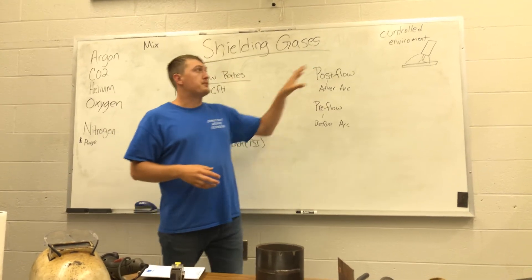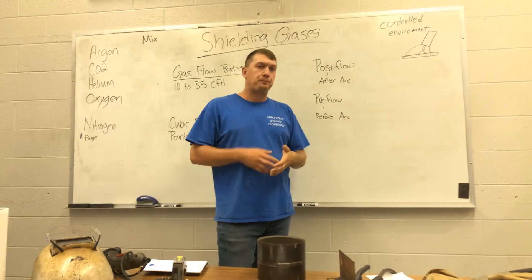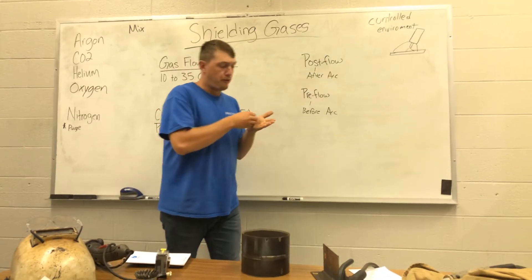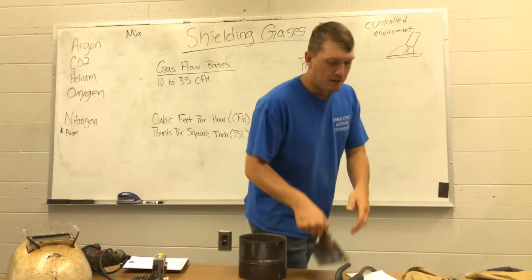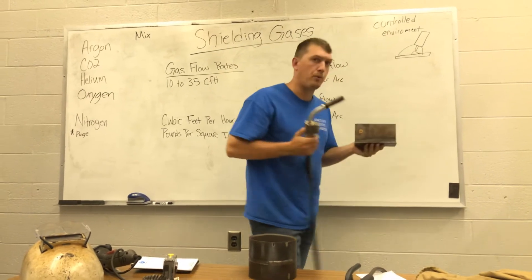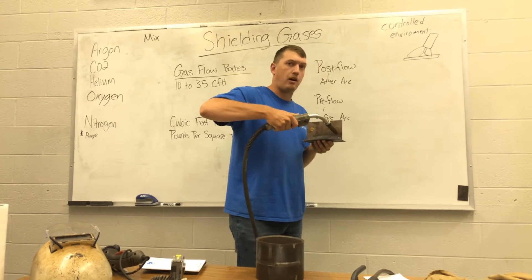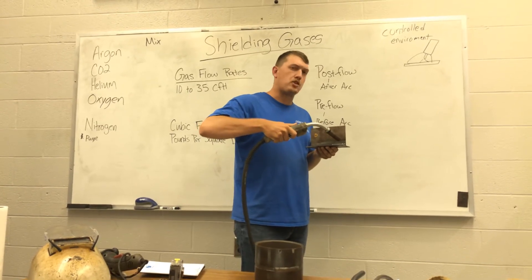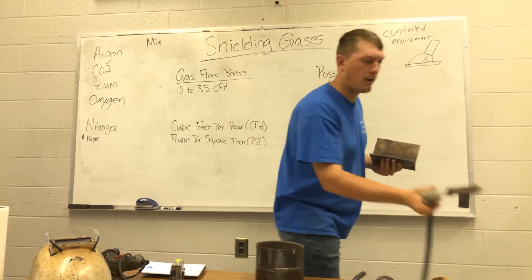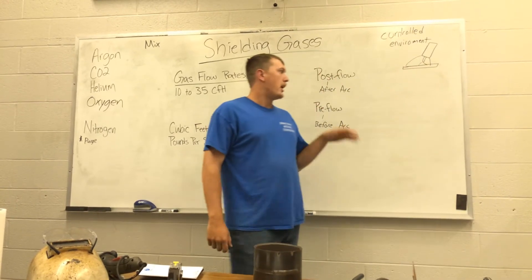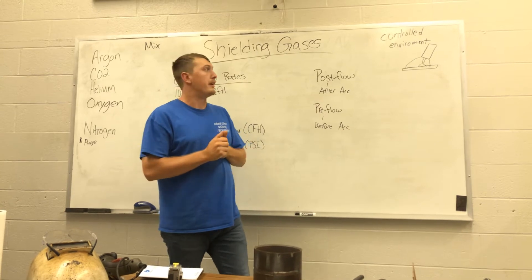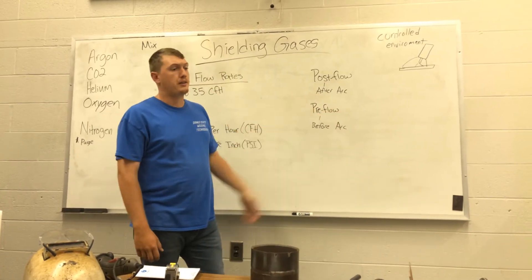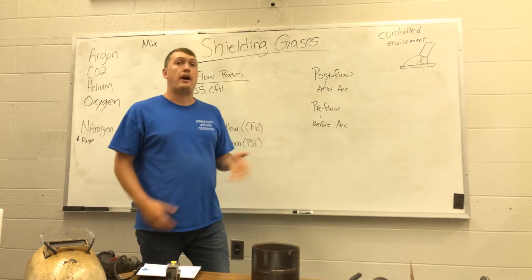Pre-flow is before the arc; post-flow is how long it lasts after the arc is extinguished. Same thing — we want to protect that tungsten if we're TIG welding, or protect the wire when we're done welding. Also, when you finish a weld — say we just welded a T-joint — we want to keep our gun on that weld for just a minute. Even though we extinguish the arc, we want to keep that shielding gas on to protect it until it cools down. That's another advantage of having a post-flow, and we'll show you guys how to set that up.